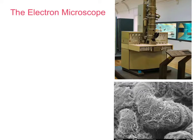We'll talk about the electron microscope in terms of how it works and a bit about its structure. Then I'll go on to talk about the two types of electron microscope: the TEM, or transmission electron microscope, and the SEM, the scanning electron microscope.